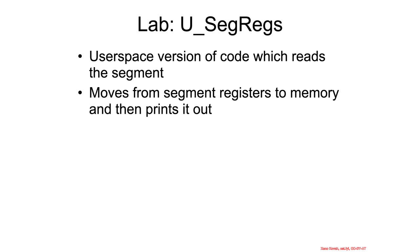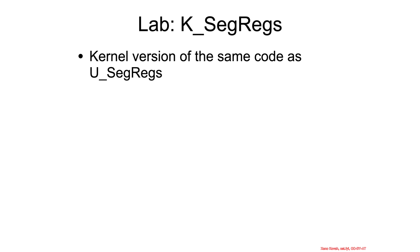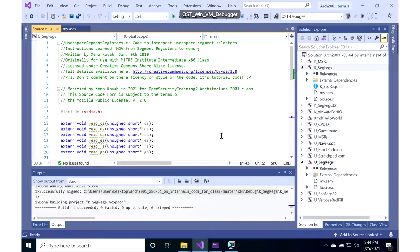We've got two labs for this. We've got the user space segment registers, which is just going to pull the values out in user space using a move instruction, putting them into memory to be read. And then we've got a kernel version of the same. So let's go ahead and do those two labs right now.